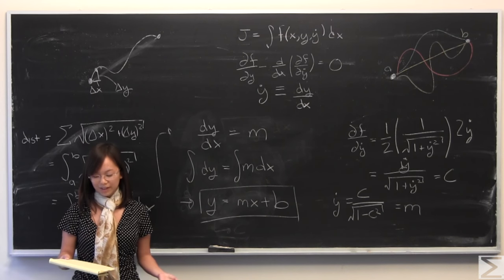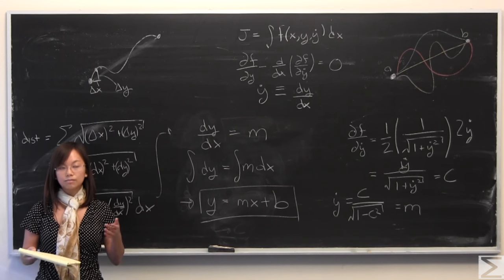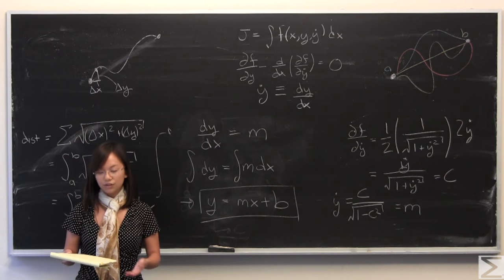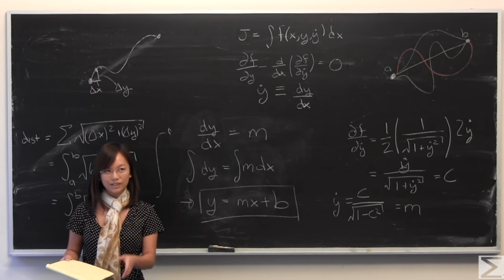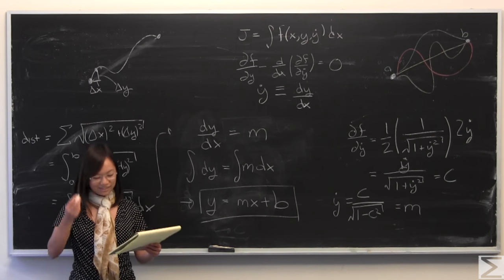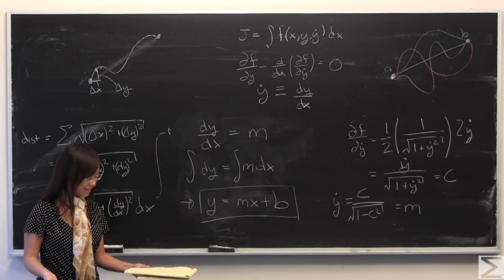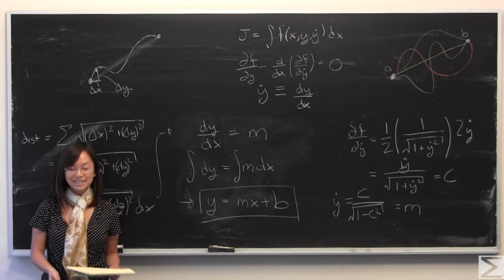You can use it to prove that the smallest perimeter area shape is a circle. You can use it to prove why if you have water in a bucket, you spin it around, it makes a parabolic shape. They're really cool, really powerful. You can even do it in higher dimensions. I just wanted to share that with you guys.